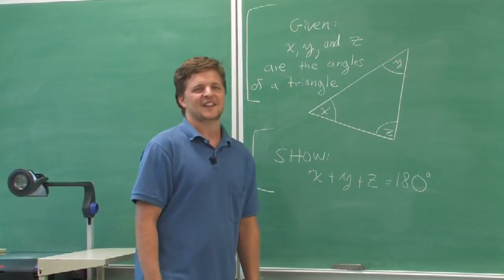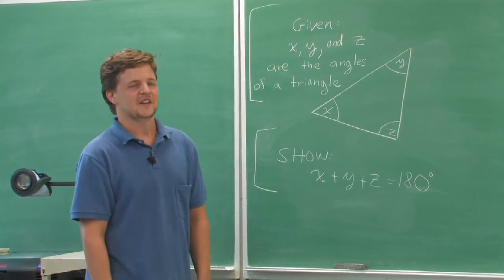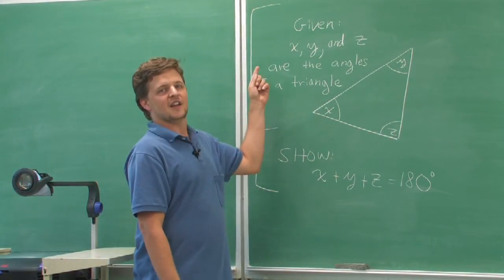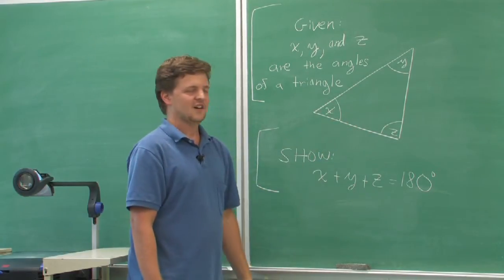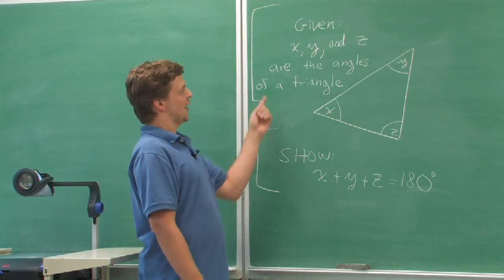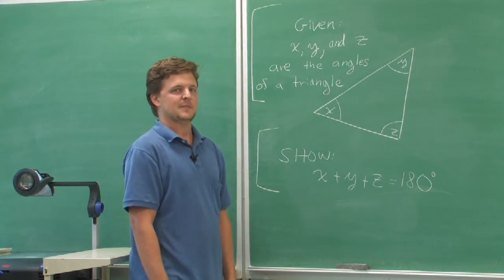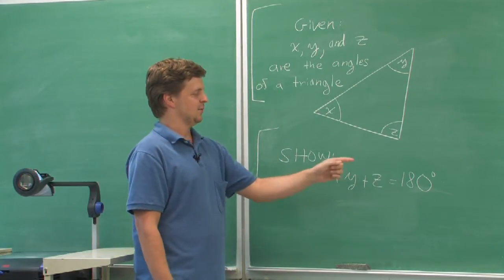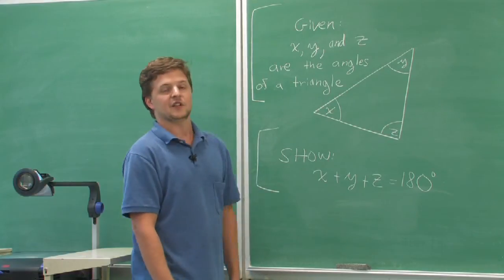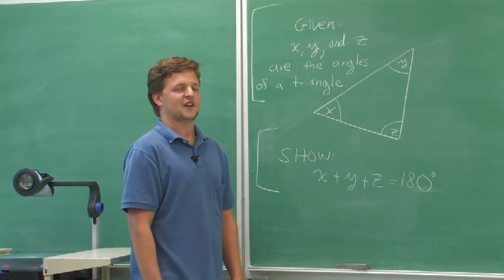Here's an example. Say that we're supposed to show that given x, y, and z are numbers which are the angles of a triangle, then we must show x plus y plus z, if they're in degrees, totaled to 180 degrees.